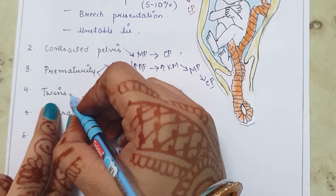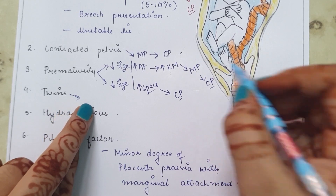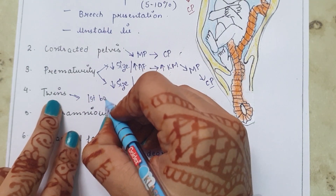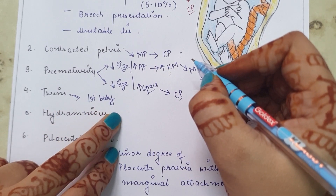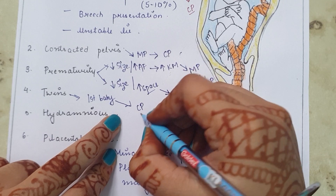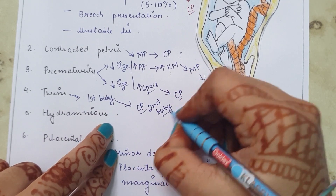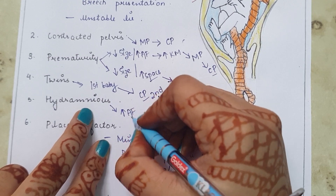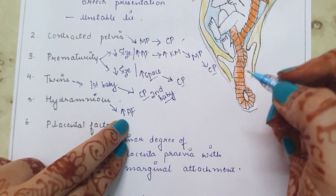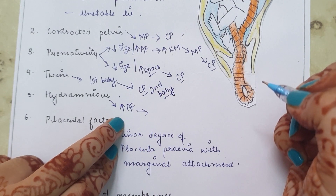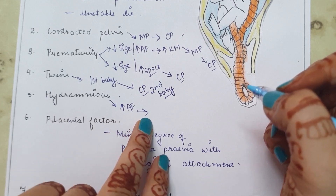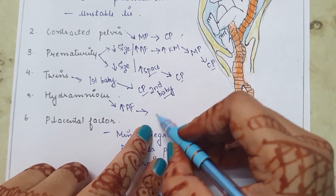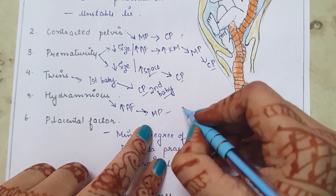Next is twins. In cases of twins, even where both babies have vertex presentation, once the first baby is born by normal vaginal delivery, there is a chance of cord prolapse for the second baby. Next is hydramnios — increased amniotic fluid more than normal in the uterine cavity. If amniotic fluid is more, it allows more than normal movements inside the uterine cavity, which leads to malpresentation, resulting in cord prolapse.